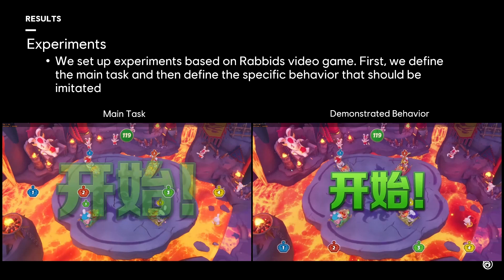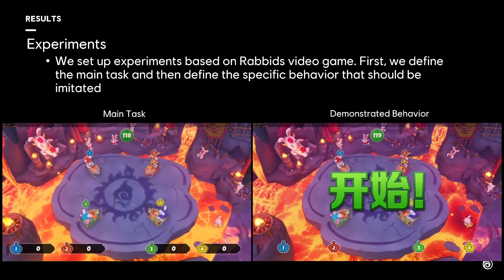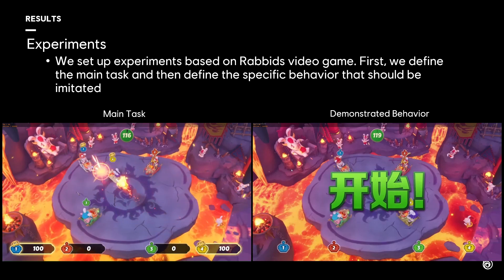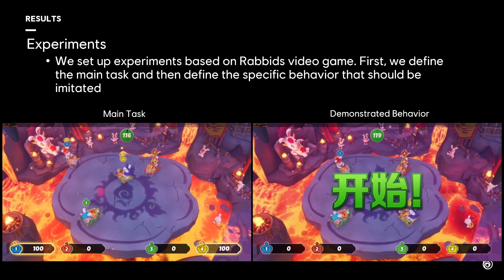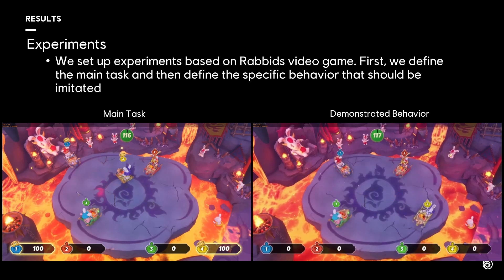We first define the main task and then define the specific behavior that should be imitated. The main task is car number 4 hit directly car number 1. The demonstrated behavior is car number 4 navigates in circles and backwards.